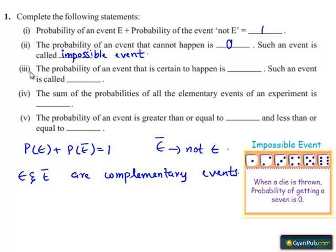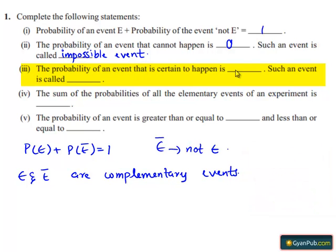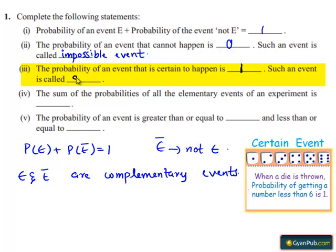Coming to the third bit, the probability of an event that is certain to happen is 1. Such an event is called a sure event or certain event.